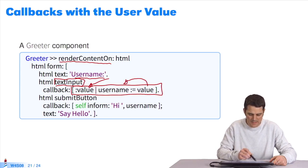We can store it in the instance variable of the greeter component Username. Next, when the Submit button is clicked, I'm going to call a new component using the command SelfInform.